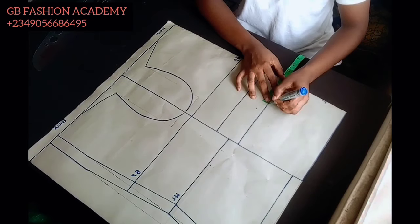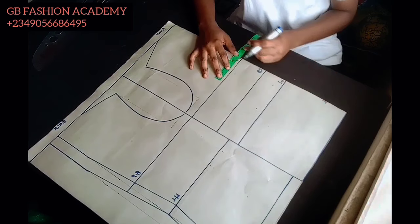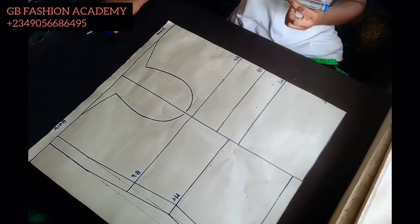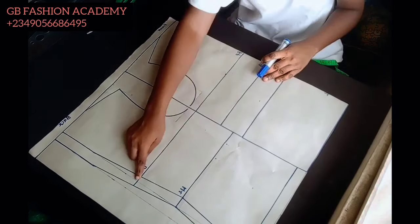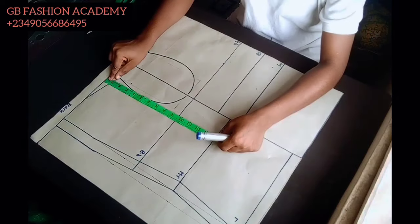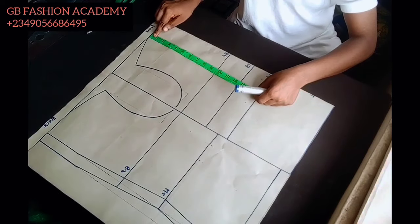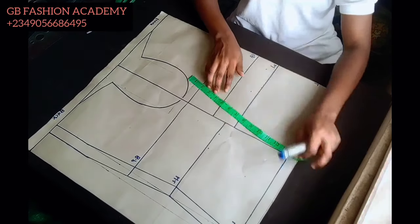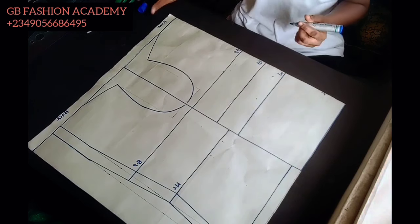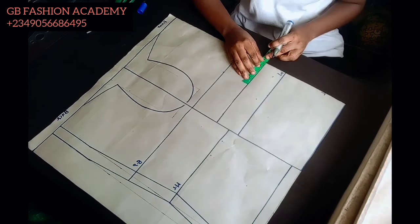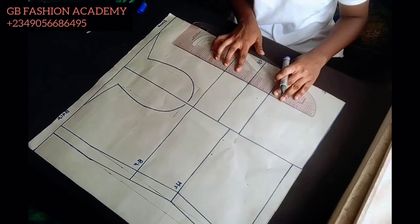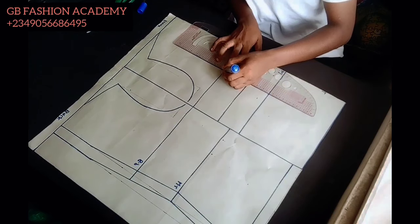The front waistline and the back waistline are not on the same line. The front waistline is longer than the back by one inch. My back waistline is 14 inches while my front waistline is 15 inches, so we have one inch difference. That one inch difference I'm going to be using to take my bust dart. You want to go ahead and get your bust span measurement divided by two — that is your nipple to nipple measurement — and then you mark it.